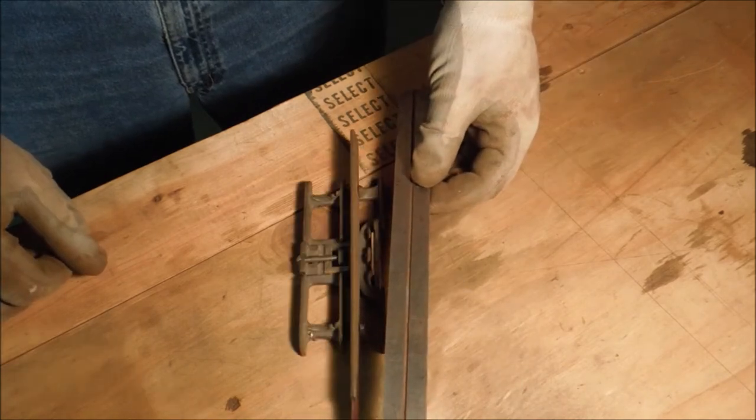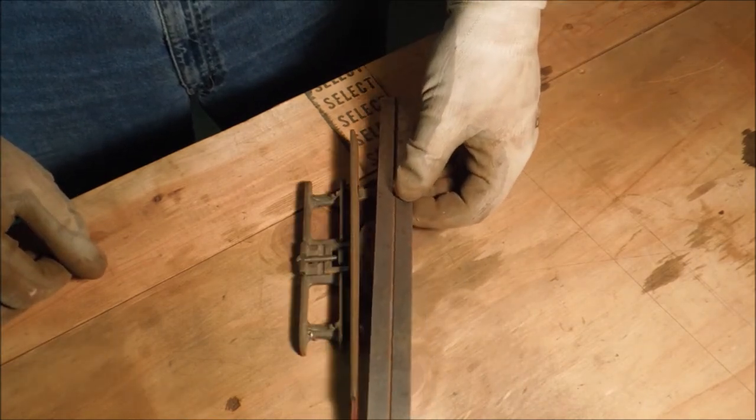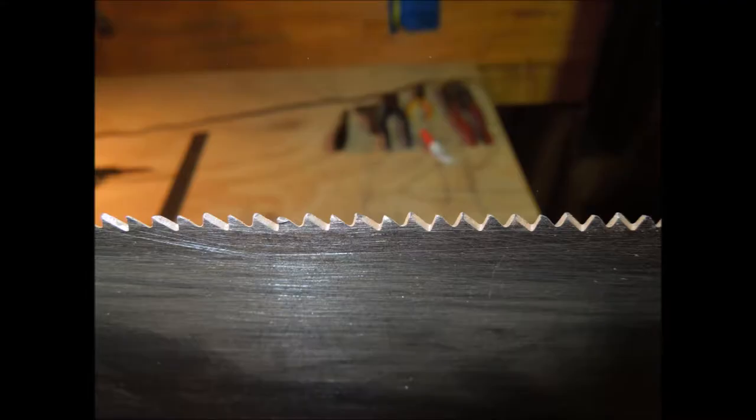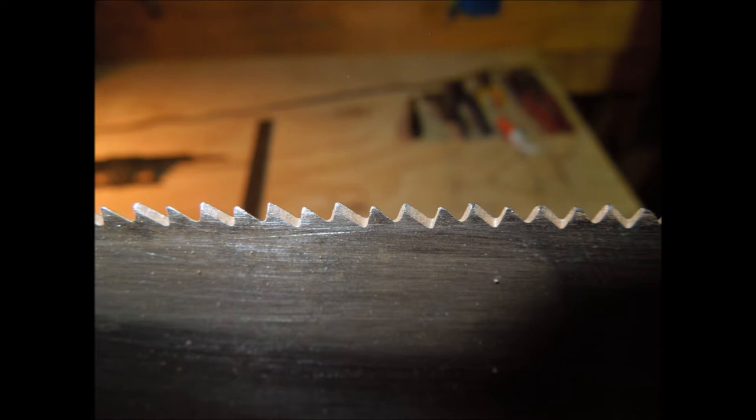I want the crosscut saw that I'm filing today to have flat teeth, so I've set the file to hold it at a flat angle. These are the teeth before jointing. You can see one's broken, and all of them are slightly staggered as far as height.